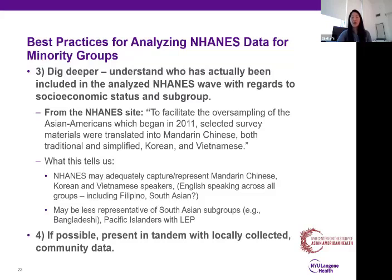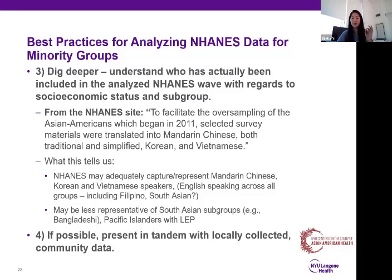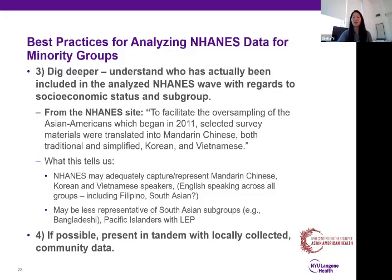Number four: if possible, present in tandem with locally collected community data. We have taken this approach where we'll use national or other administrative data sets, but then also make comments about the community-based data that we have. A caveat, however: this strategy has been met with mixed success — some peer reviewers don't really like this and don't understand why we're doing it. So if it's not possible to do that within your manuscript, you can always publish that separately and then refer to it within your analysis.